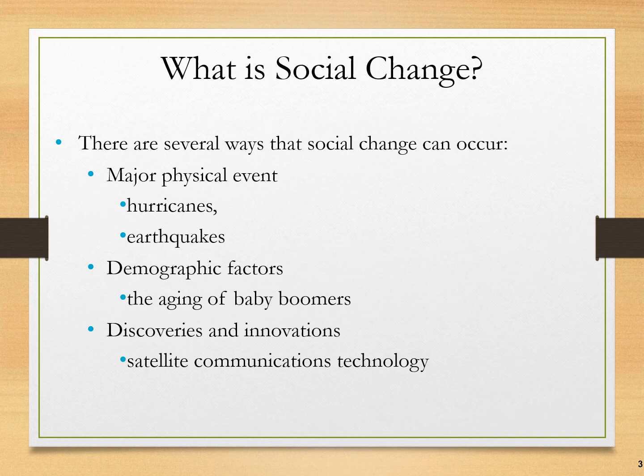There are many ways that social change can occur. Those on this slide are unintentional social change. It could be a major physical event like a hurricane or an earthquake, or we could look at demographic factors — the aging of the baby boomers, who at every step of their life course, because of their sheer numbers, have created social change reflective of that life period.